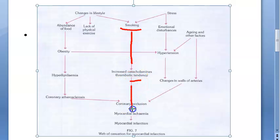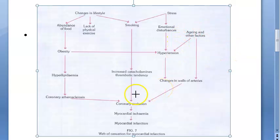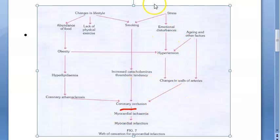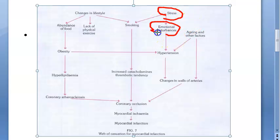The next pathway is smoking. Because of smoking, there are increased catecholamines and thrombotic tendencies, which lead to coronary occlusion. So smoking leads to coronary occlusion through thrombotic tendency and increased catecholamines.